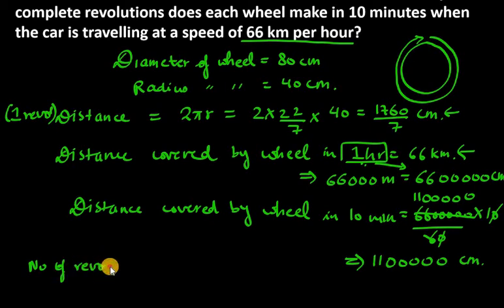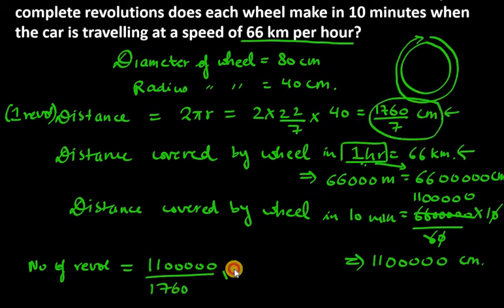It is total distance travel. How much is it? 11,000,000 cm. How much distance in one revolution was your time? It was 1760 over 7.